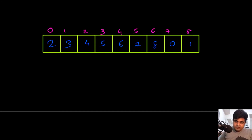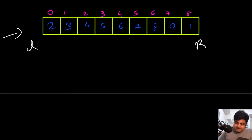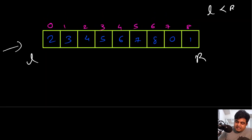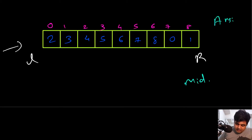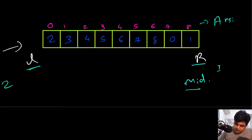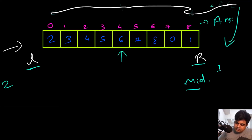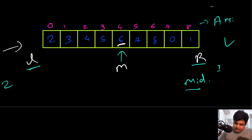Let me show you with a detailed example. We assign initial values of left and right. We also have an answer variable storing the lowest value found so far. Currently the value of left is two and right is one, so left is greater than right. We find the mid pointer: left position is zero, right position is eight, so (0+8)/2 = 4. The value at position four is six.